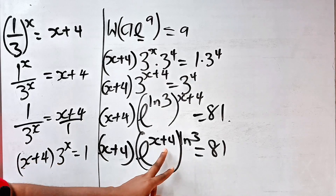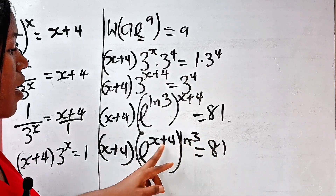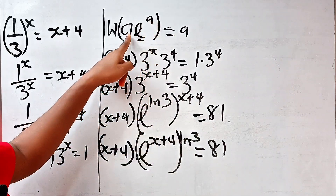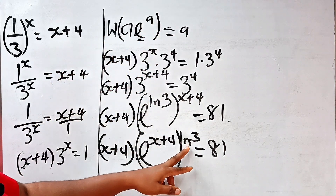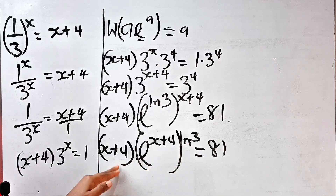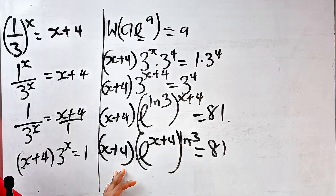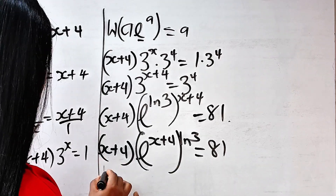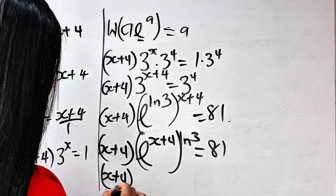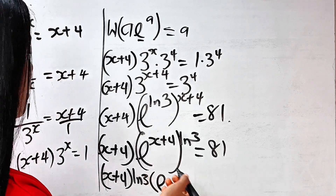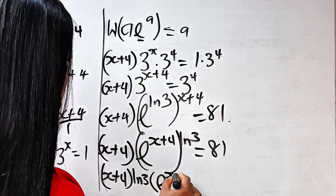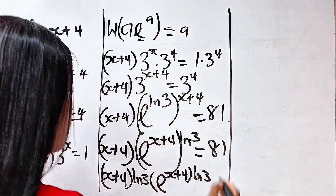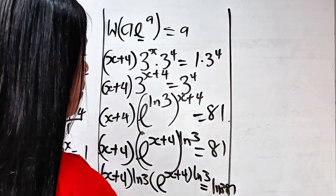Notice that the power has now changed to (x + 4)·ln 3. We're supposed to have the power and coefficient be the same. So we need to multiply the coefficient by ln 3 as well. Multiplying through by ln 3 gives us (x + 4)·ln 3 times e to the power of (x + 4)·ln 3, equal to 81·ln 3.